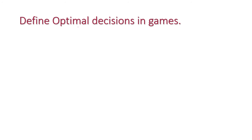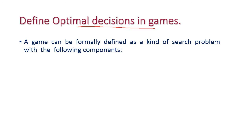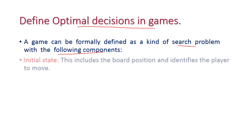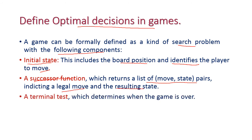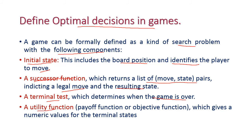The next question is: what are optimal decisions in games? A game can be formally defined as a kind of search problem with the following components: first, initial state, which includes the board positions and identifies the player to move; second, successor function, which returns a list of move-state pairs indicating legal moves and resulting states; third, terminal test, which determines when the game is over; and fourth, utility function (also called payoff or objective function), which gives a numeric value for the terminal state.